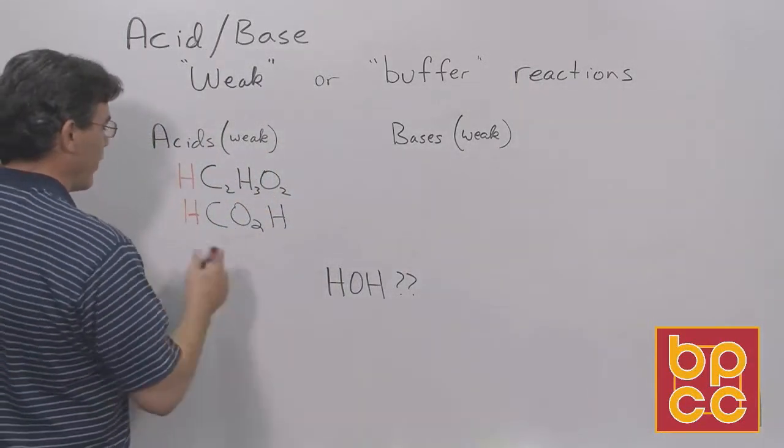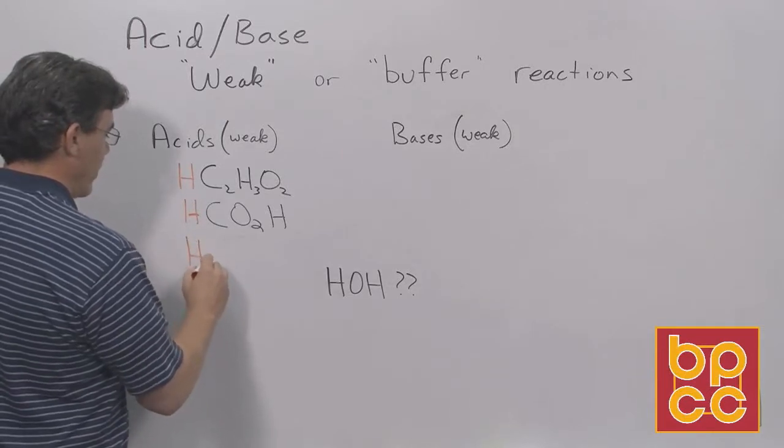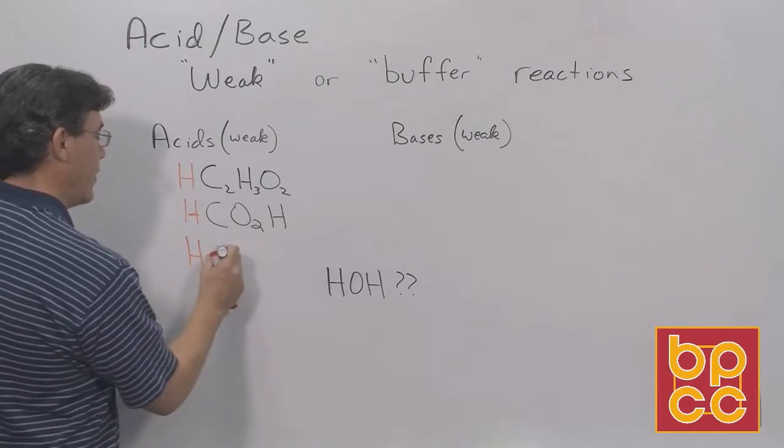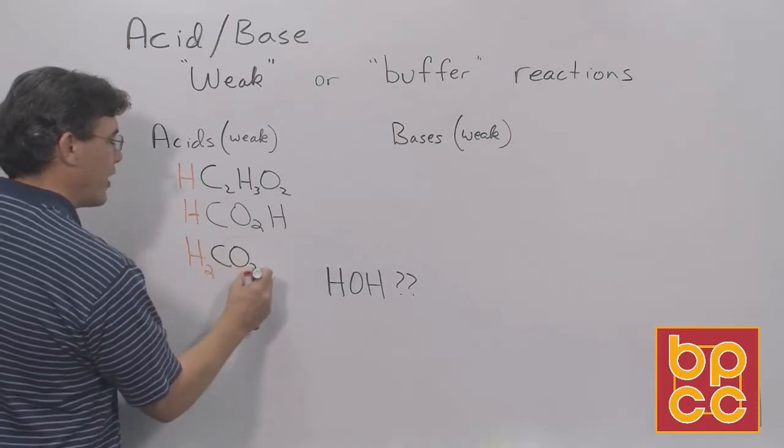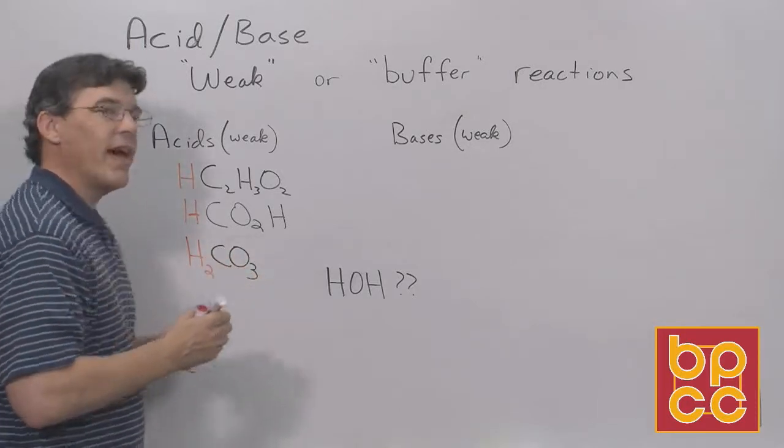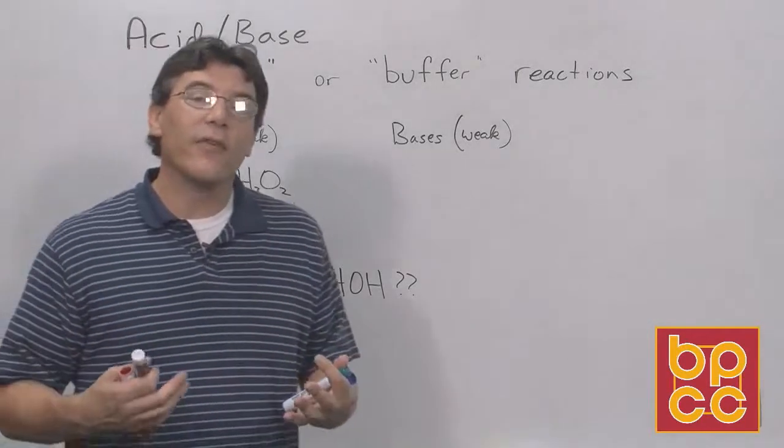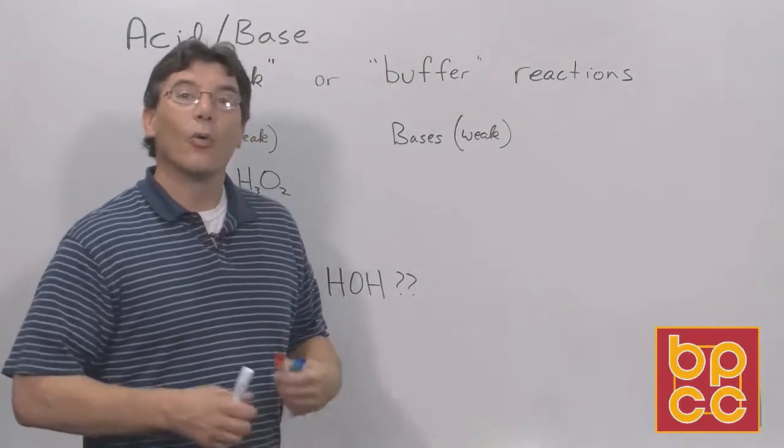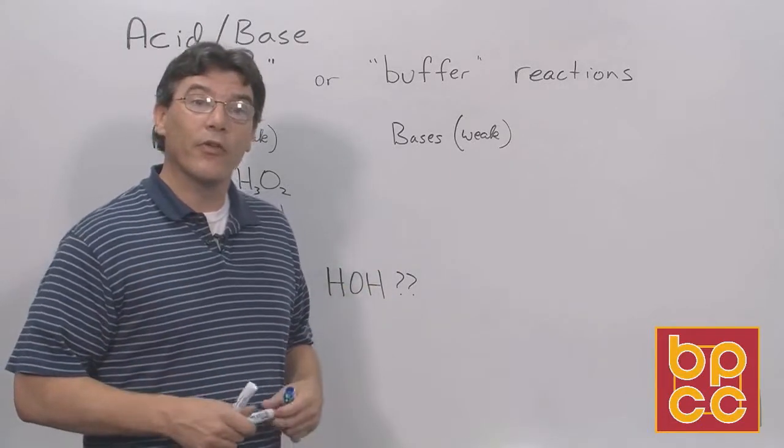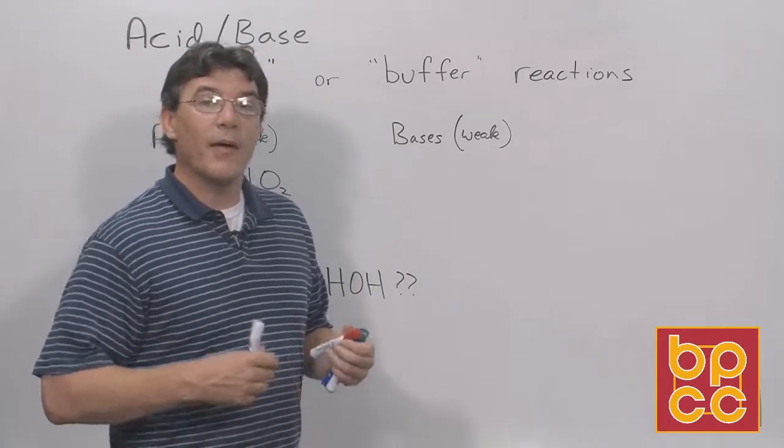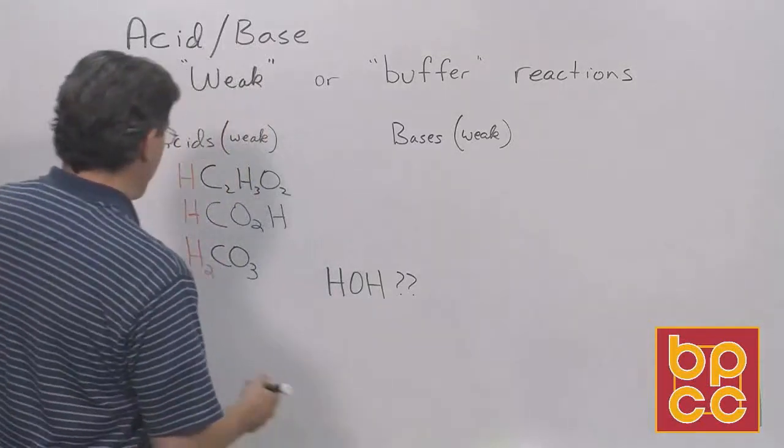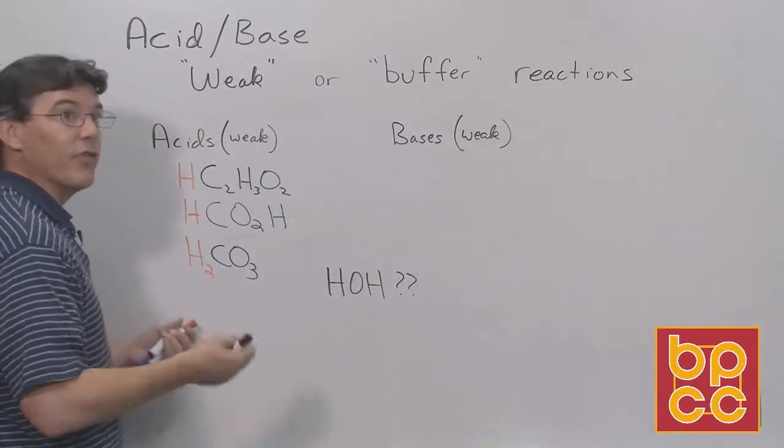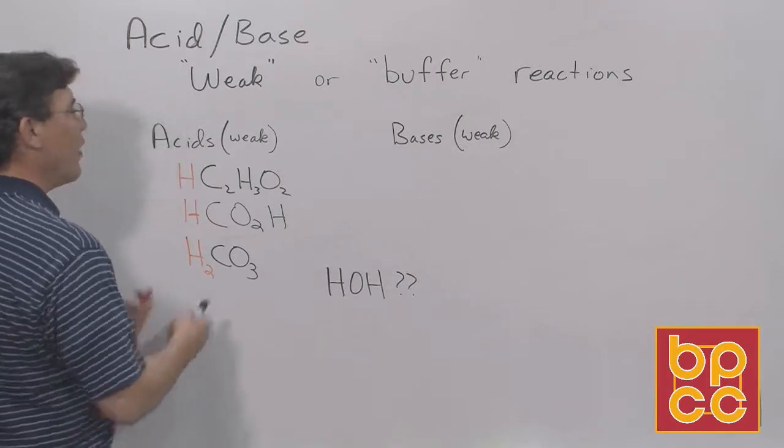And then another weak acid which is very important biologically is this one here, H2CO3. This is called carbonic acid, and this is the acid that's involved in our respiratory processes. When we exhale or when our cells undergo metabolism and respiration, what's produced is carbonic acid and that needs to be gotten rid of.